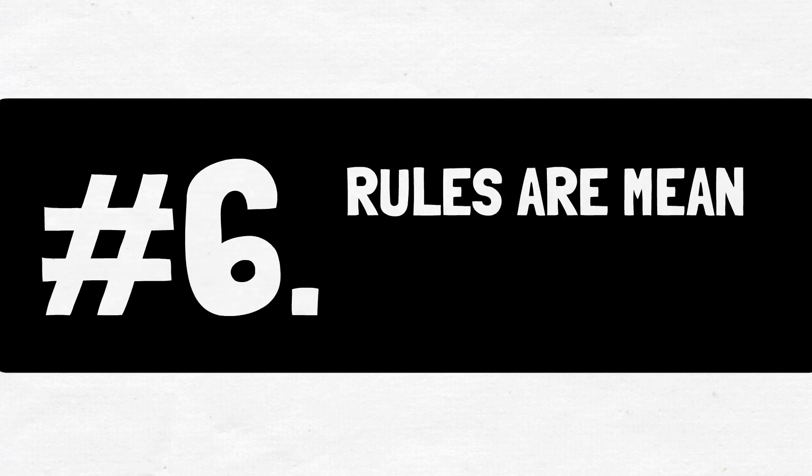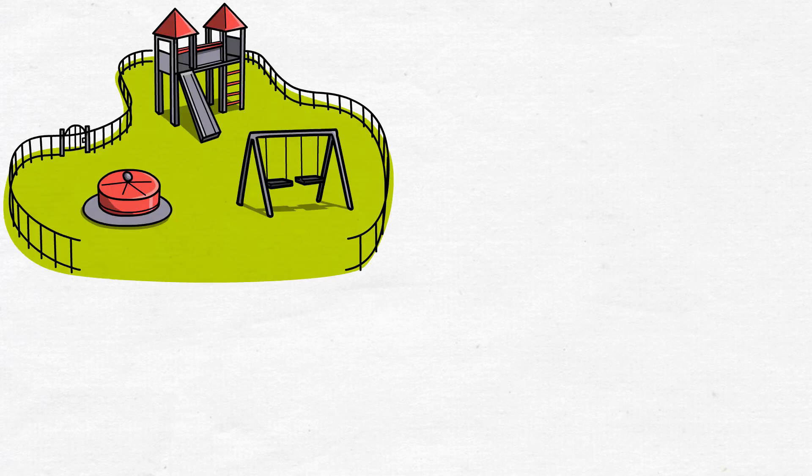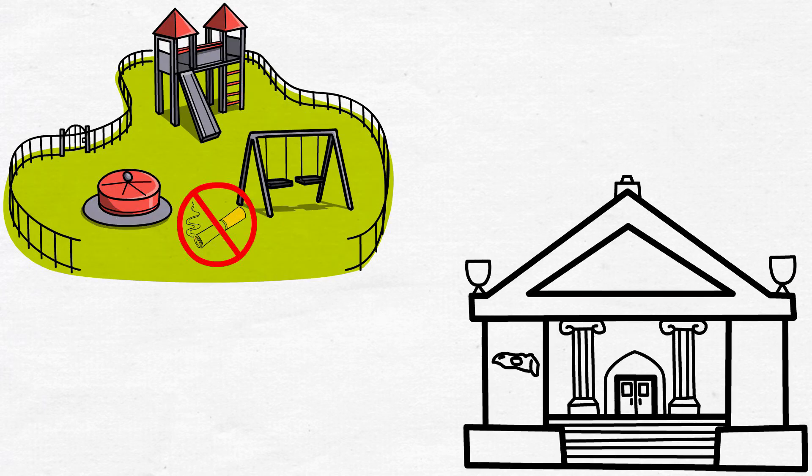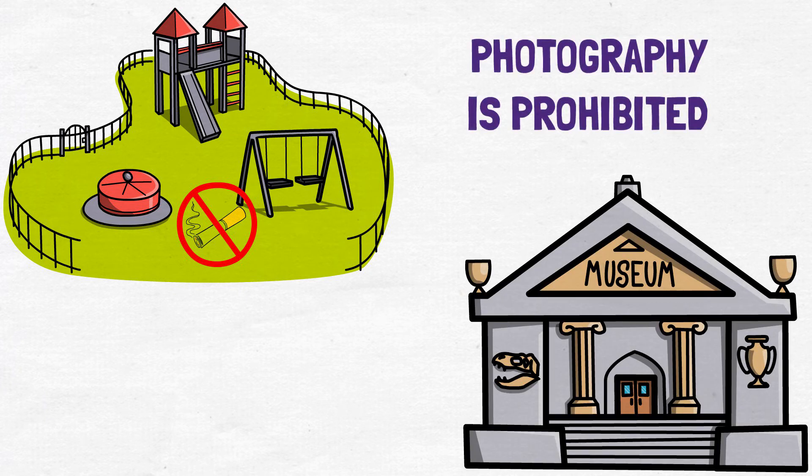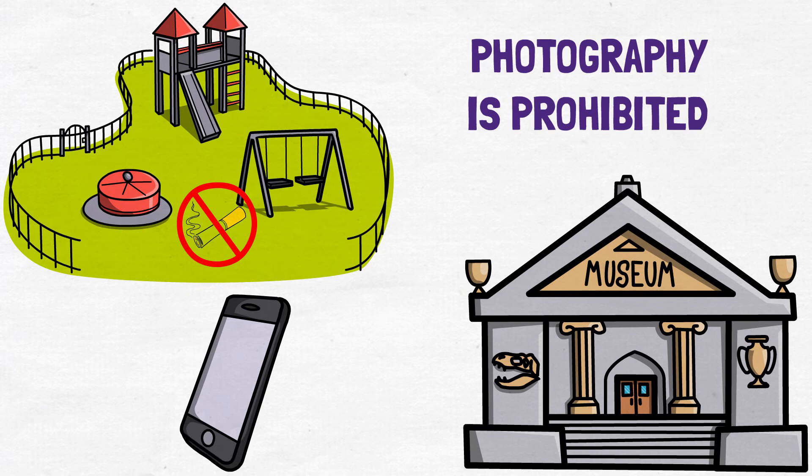6. Rules are meant to be broken. Every place you go has a set of rules, and the stricter they get, the more you want to break them. Suppose you go to a museum where photography is prohibited. At least for once, you will think of sneaking out your phone and taking a quick snap.